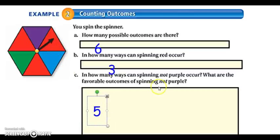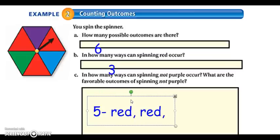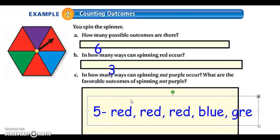I want to list now my favorable outcomes of spinning not purple. So I should have five things here because there are five ways to spin not purple. So I'll include all five. There are three reds, there's a blue, and there's a green. So five favorable outcomes. Here are my five favorable outcomes, not spinning purple.